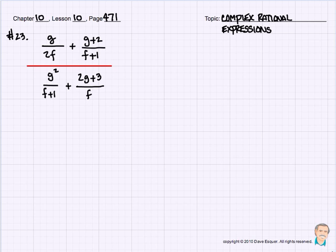And we're just doing this one problem as an add-on to everything else we've talked about. It is a very complex rational expression. The numerator is g divided by 2f plus g plus 2 divided by f plus 1. The denominator is g squared over f plus 1 plus 2g plus 3, all that divided by f.